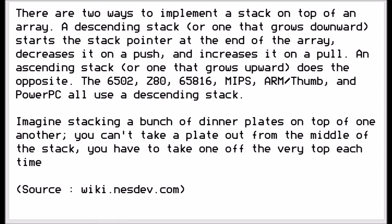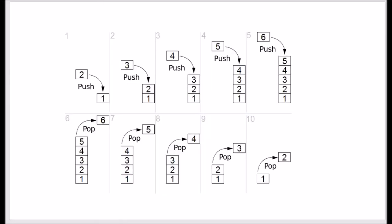Picturing this: you start off with one item on the stack and add another, so you end up with two. Push another and you have three, then four, up to six. To get to item number one at the bottom, you have to pop six times. And if you wanted to get to item one, you lose five pieces of information, because you have to find somewhere else to store them to get to that point.